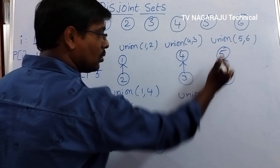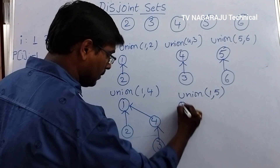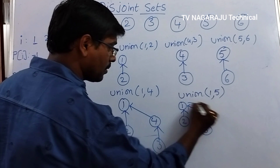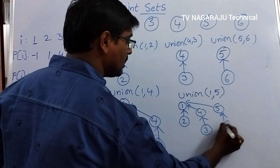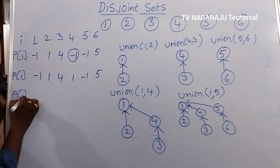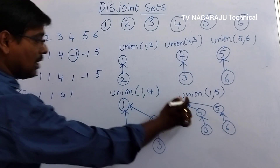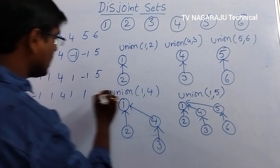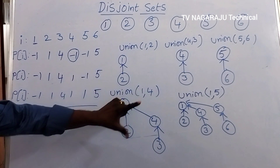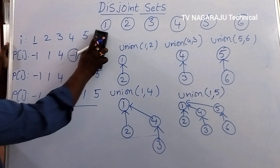Now perform union of this tree with the tree rooted at 5. The root node here is 1 and there the root node is 5. After union the tree contains nodes 1, 2, 4, 3, 5, 6. Update the p[i] values: p[1] = -1, p[2] = 1, p[4] = 1, p[5] = 1, p[6] = 5. Each and every time you have to update the p[i] value.